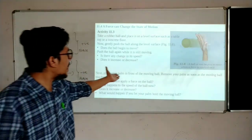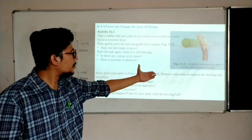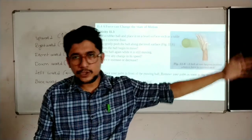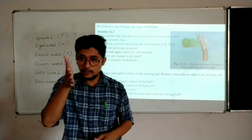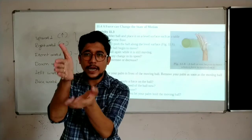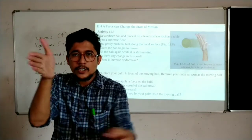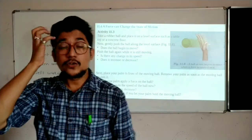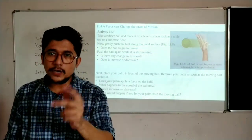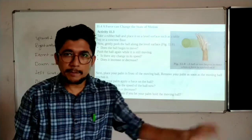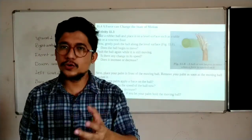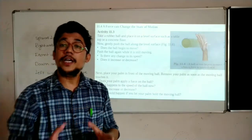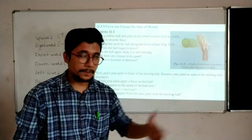Next, place your palm in front of the moving ball and remove your palm as soon as the moving ball touches it. Suppose your friend is pushing the ball and it is rolling over the ground and comes to you. You put your hand in the way of the ball, and when the ball hits your hand, at the same time you take up your hand. So the speed of the ball will not completely stop — it will lose its force partially. It will not move as fast as before.